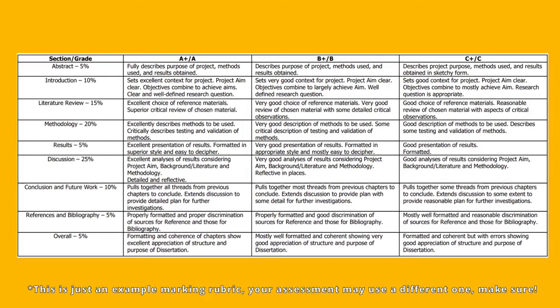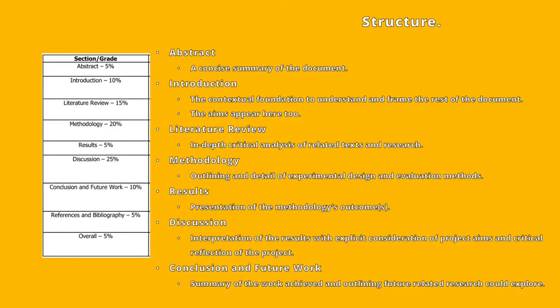So taking this as an example, we want to look at the section and slash grade column. This is where each section, hint hint nudge nudge, is listed and provided a percentage. So just to make that very obvious, here is the structure. And we've taken away the comments and we've just got the section slash grade and I've given you a definition for each of these sections here. This is just in case you've never came across these types before.